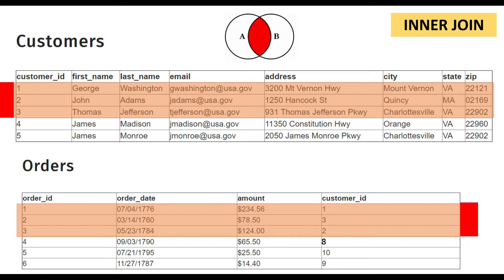A customer has a unique customer ID and orders also have a unique order ID. The orders table is joined with the customers table using customer ID. For example, there are only three records — customer IDs one, two, and three — which are matching with the orders data. Inner join will retrieve only those three matching records; all other records will be rejected.